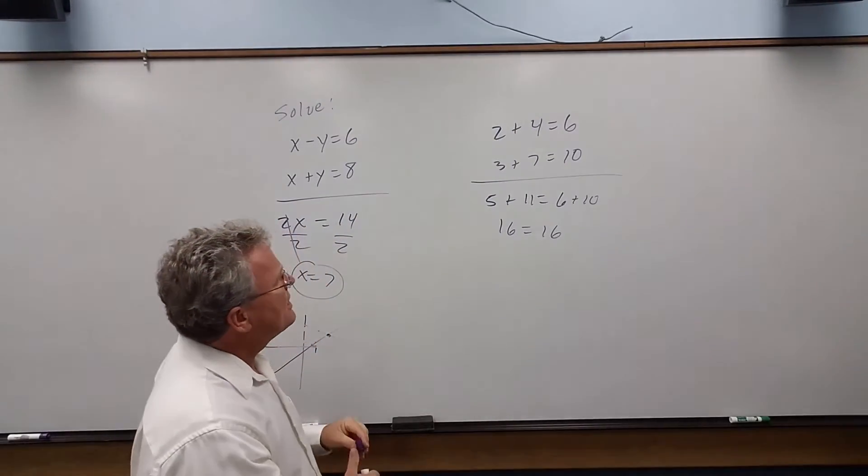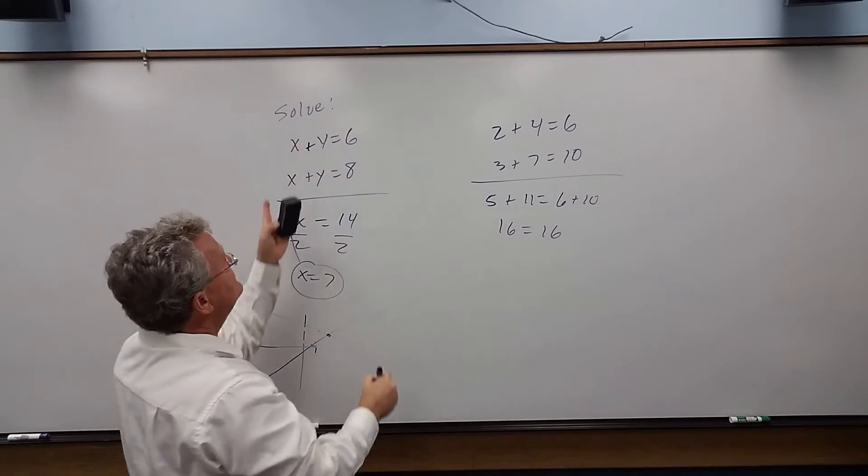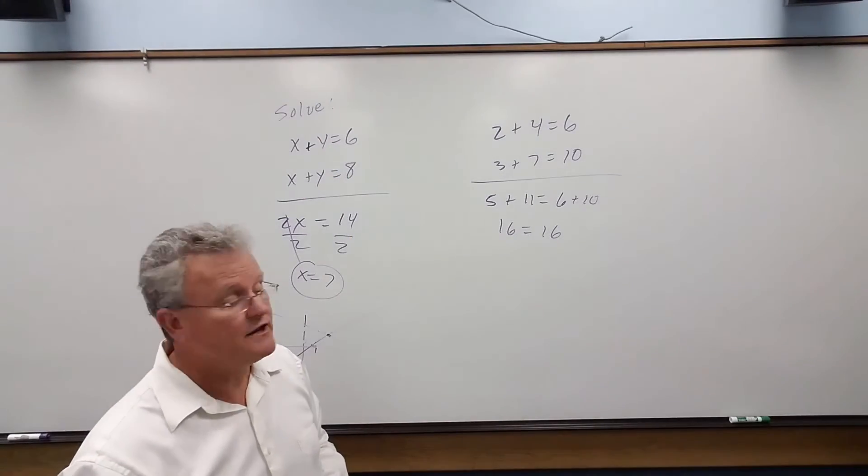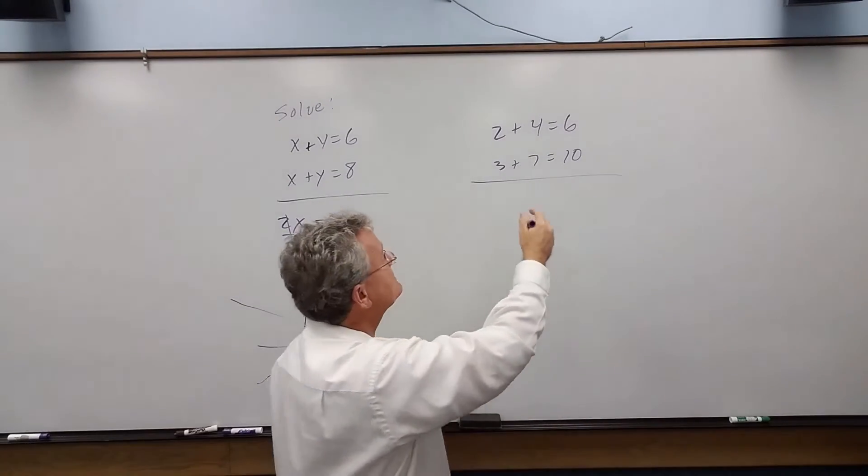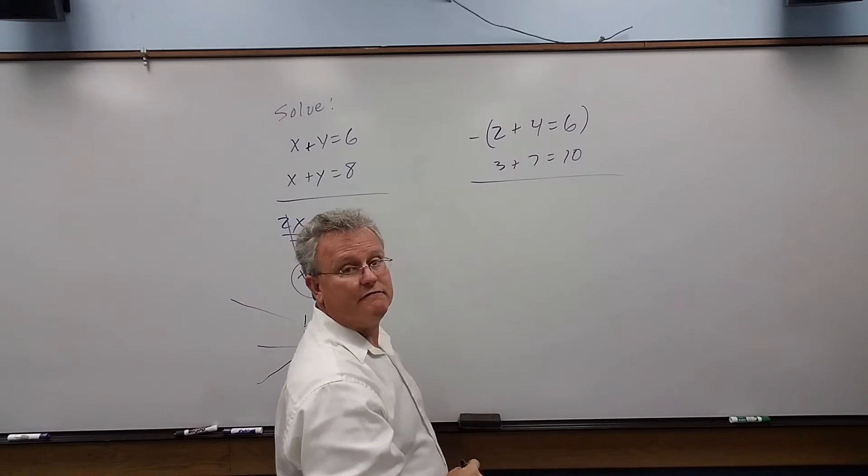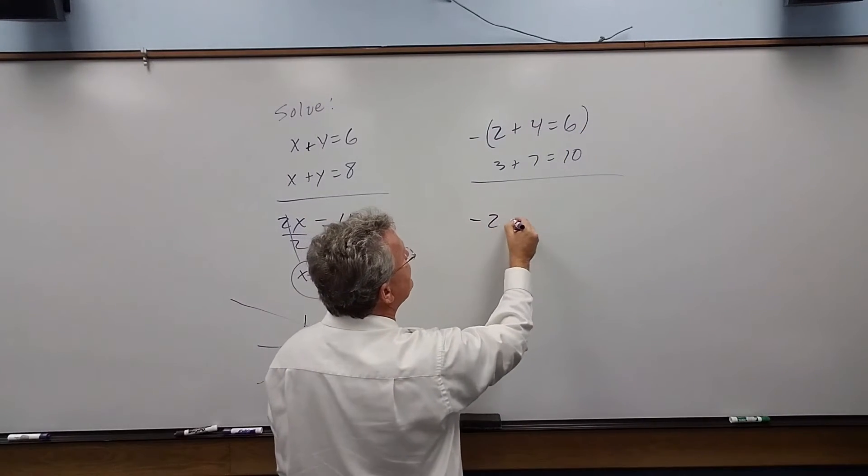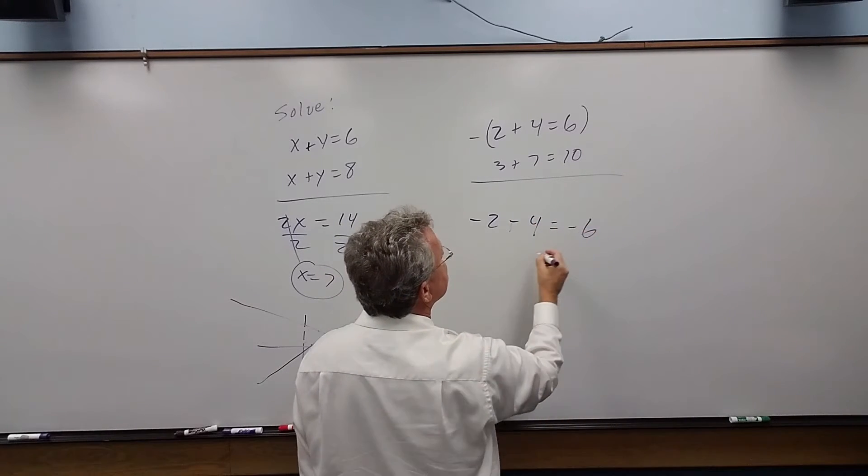Now, actually, another thing here is let's say we had something like this and we had to multiply by a negative first. We could do the same thing here to illustrate that it works. Let's say we multiply this equation by a negative first. What do we do? We get negative 2 minus 4 equals negative 6.